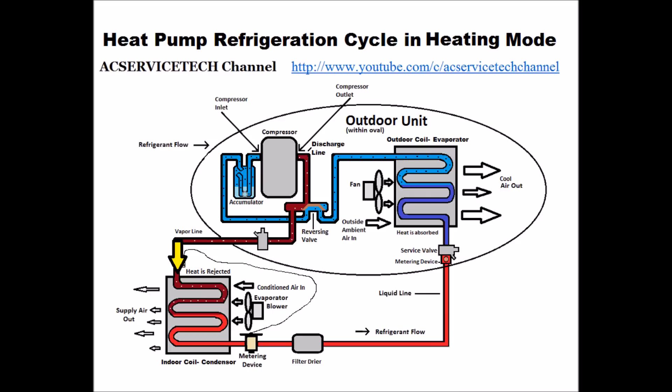It used to be called the evaporator coil, but now it's called the condenser coil because we're in heat mode. It comes into the condenser coil as a high pressure, high temperature vapor refrigerant and it starts rejecting heat into the conditioned air. As it rejects heat, it lowers in temperature until it gets to the saturated state where liquid and vapor both exist. It then goes through the saturated state, which is where it's rejecting most of its heat.